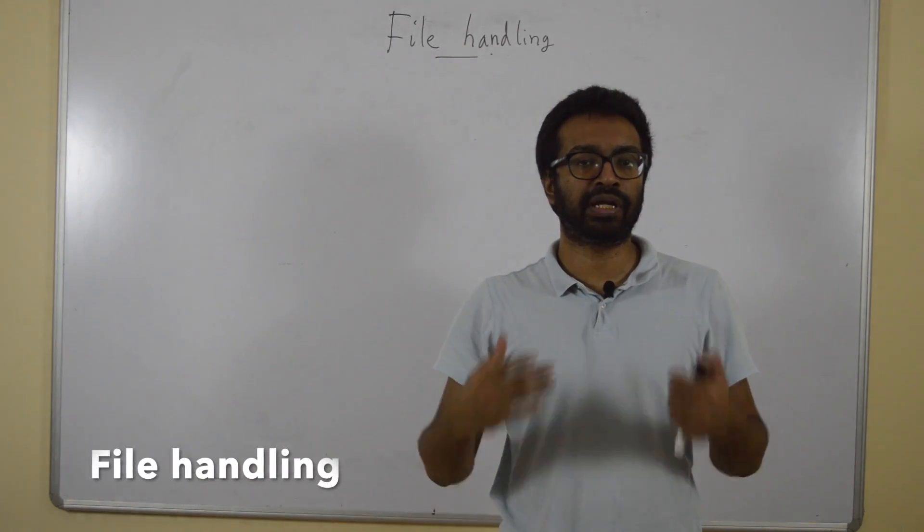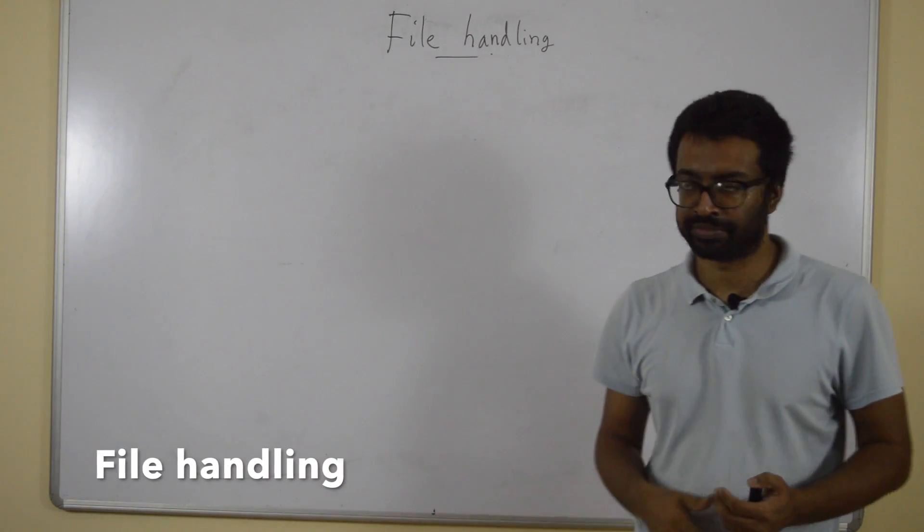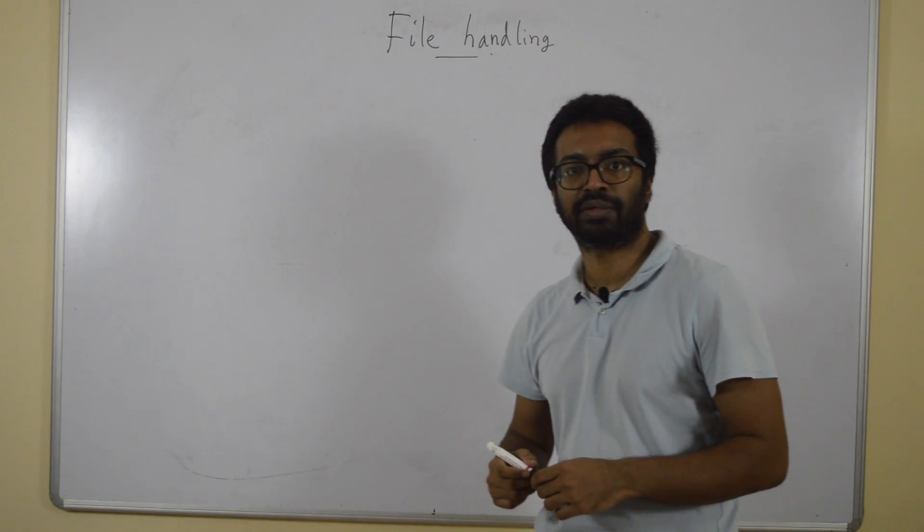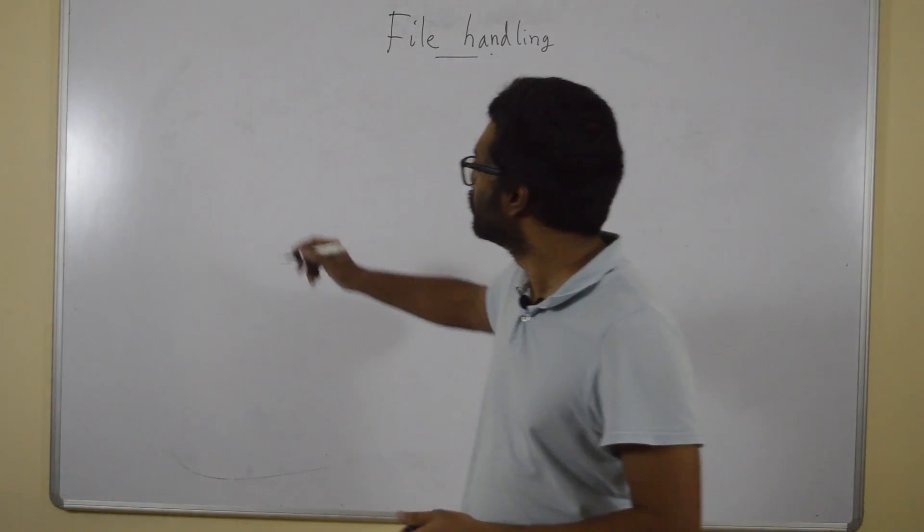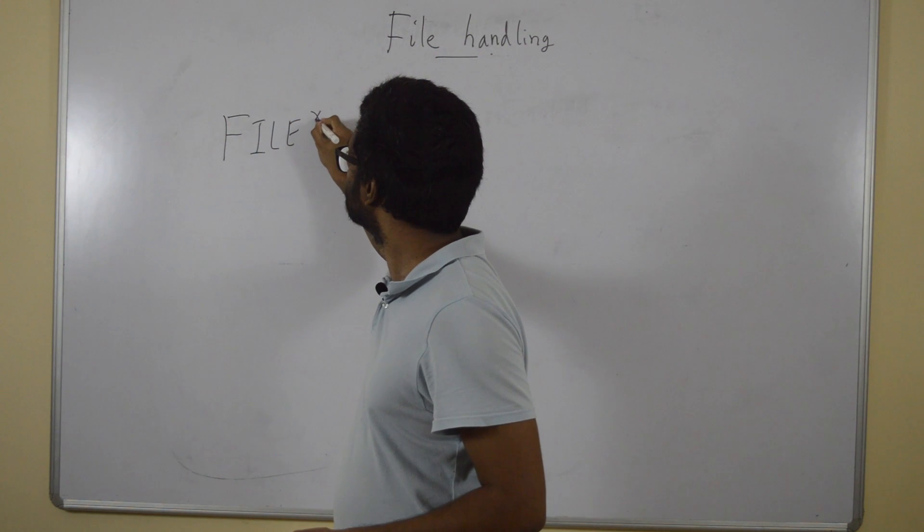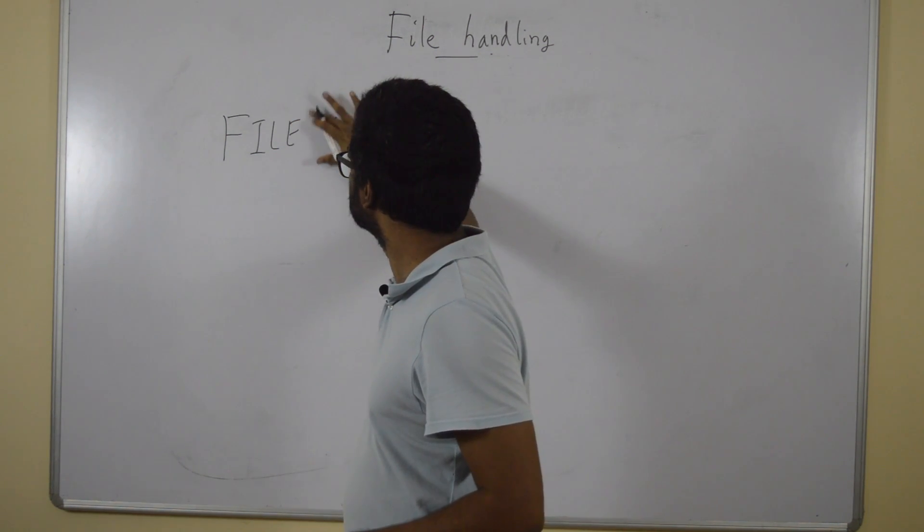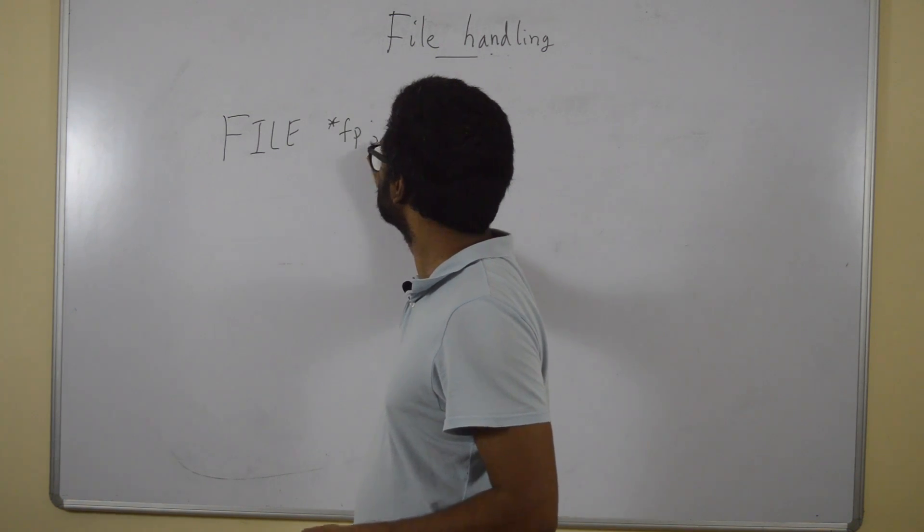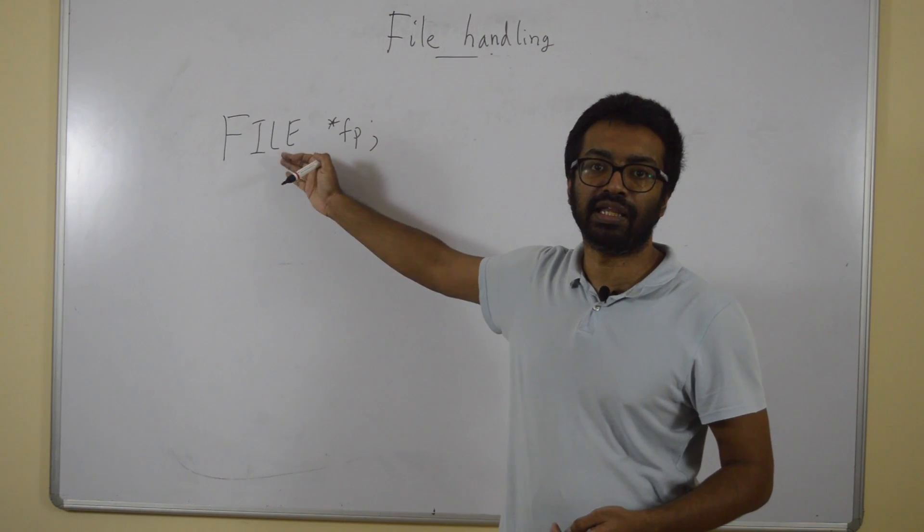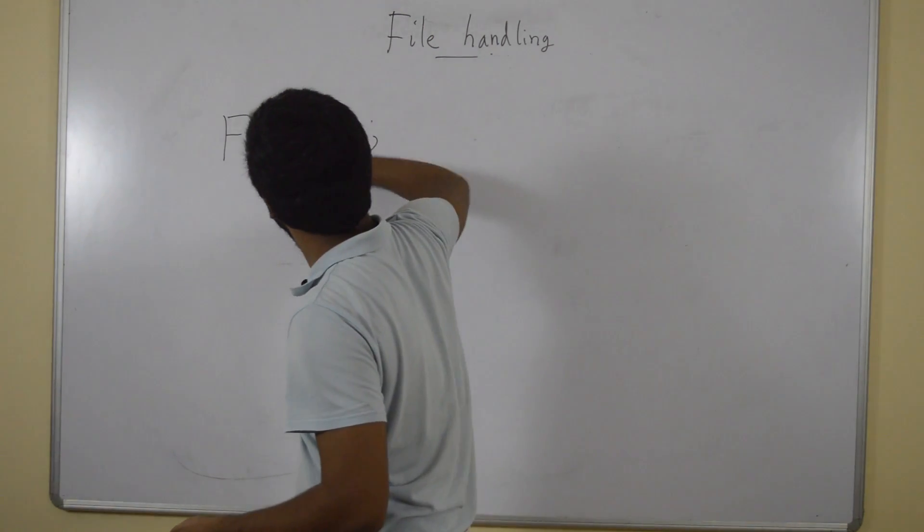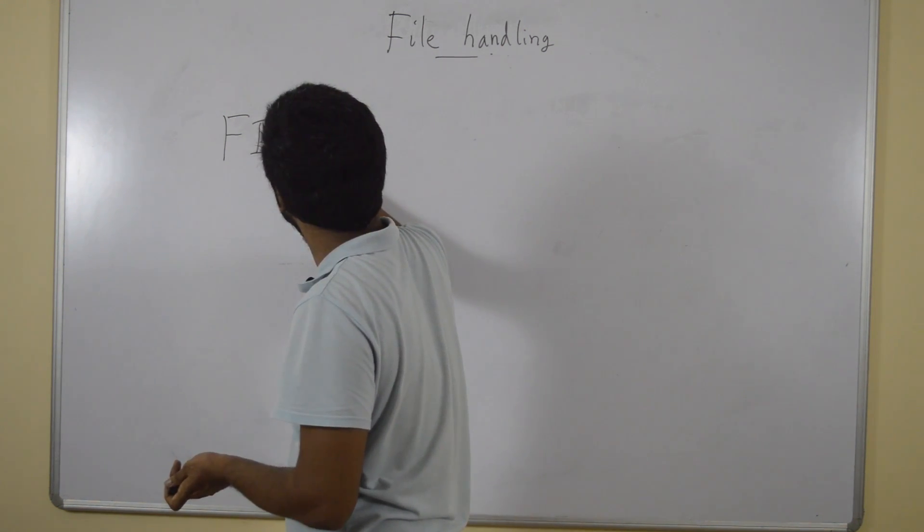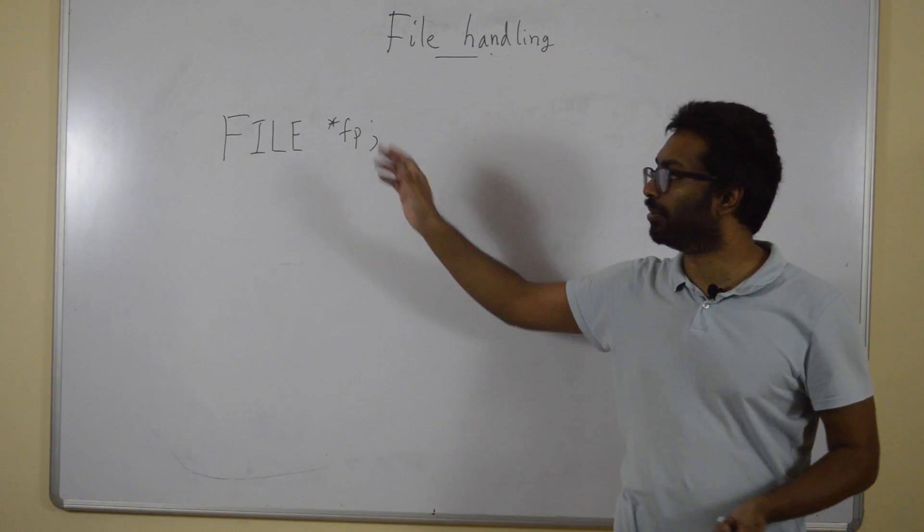File handling, how do I read and write from files? For file handling purposes, first we need to declare a file pointer. I have declared a file pointer, so it has to be F-I-L-E, all caps. I have named it fp.